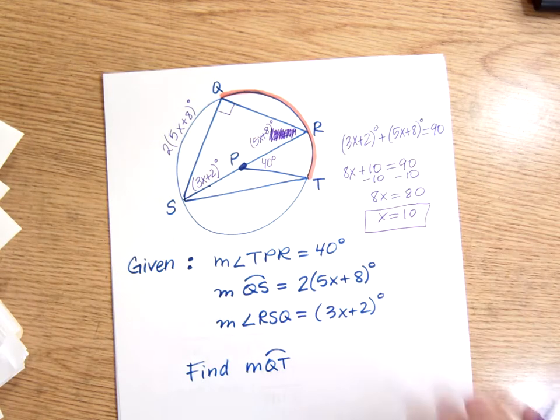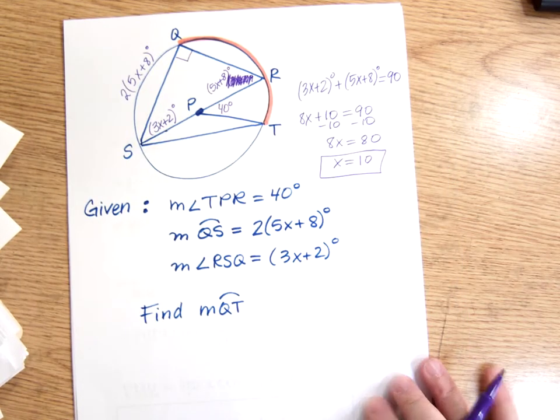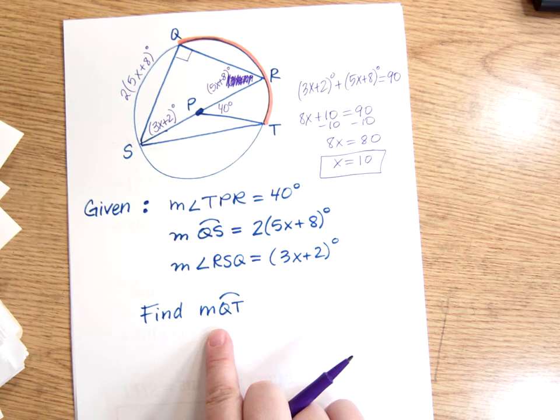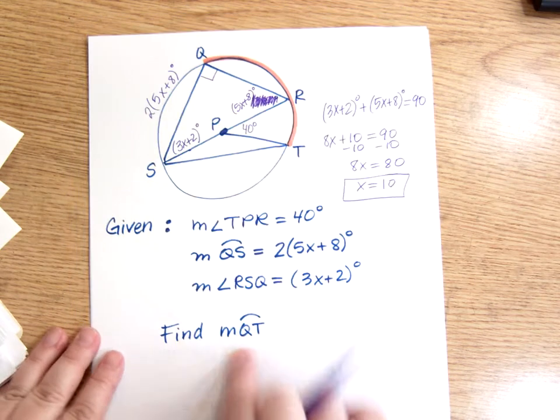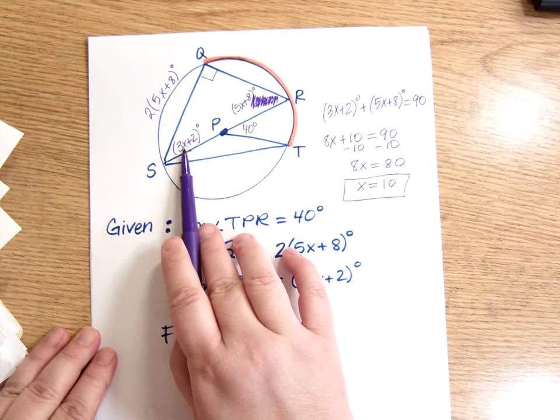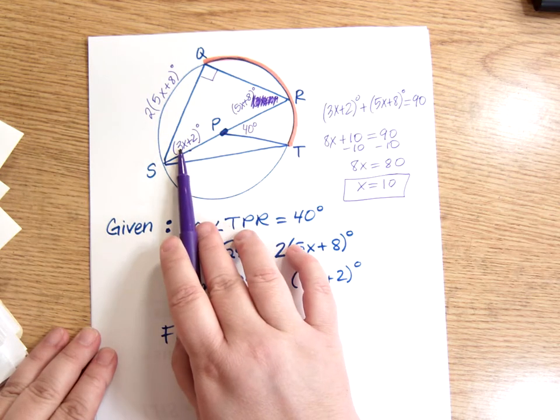Am I done? No, that's not what I was asked to find. I was asked to find the measure of arc QT. So I'm going to go back in here and plug in 10, which tells me that this angle, 3 times 10 is 30, plus 2.